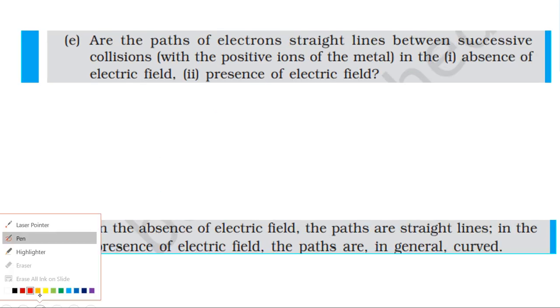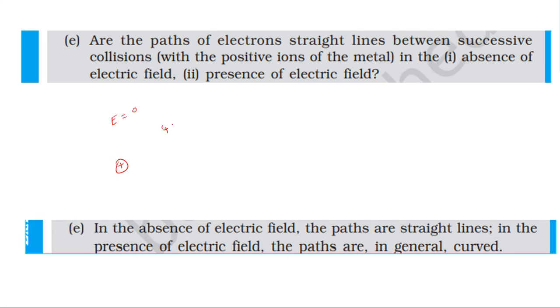Are the paths of electrons straight lines between successive collisions in the absence of electric field and in the presence of electric field? In the absence of electric field, between collisions with atoms, the electron moves in straight lines. In the presence of electric field, the electron still moves between collisions, but the resultant velocity includes both thermal velocity and drift velocity. The path may curve slightly but essentially remains between successive collisions.